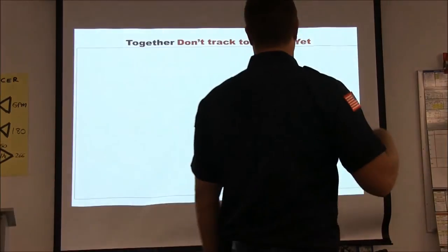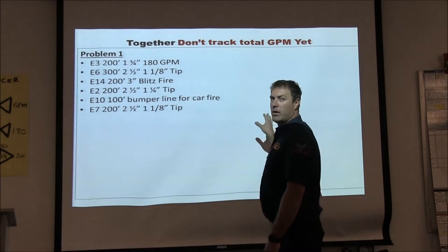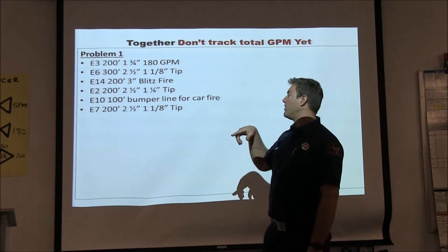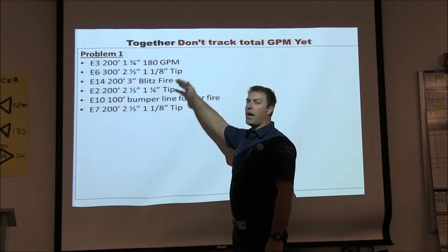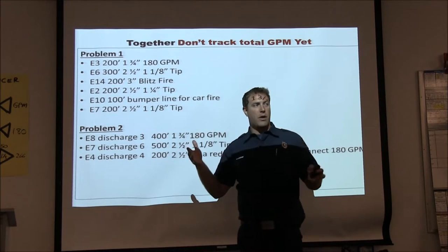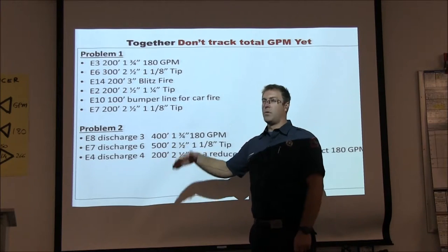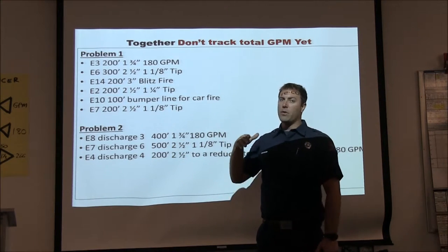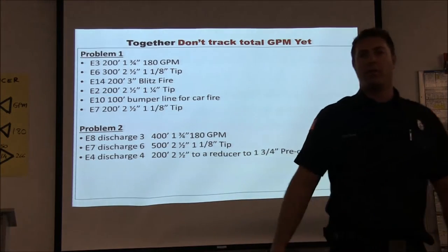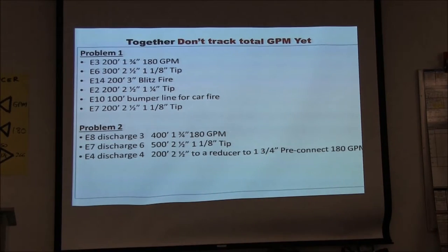Now that we've found items on the chart, we'll do these problems together as a group. Draw the problem, go to the panel, write it out, then go back to the pump table and charge the line. Problem one uses total line pressures from the chart. Problem two uses extended lines — our chart goes to 300 feet, so we're doing 400 feet on inch-and-three-quarter and 500 feet on two-and-a-half — done traditionally with nozzle pressure and friction loss. If you're at home, do problem one, erase it, move to problem two, erase it, then start the video again.